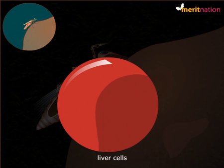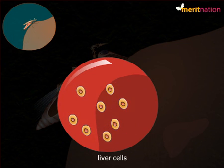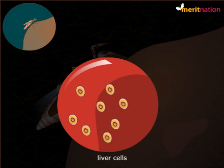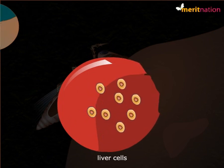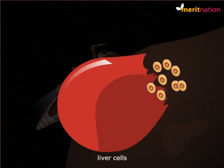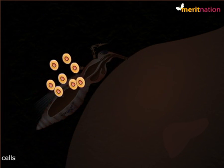Inside the liver cells, the sporozoites divide repeatedly and new spores called merozoites are formed. These merozoites emerge and are released into the red blood cells by rupturing the liver cells, as you can see on your screen.